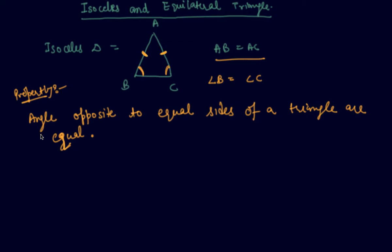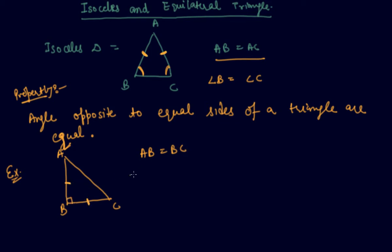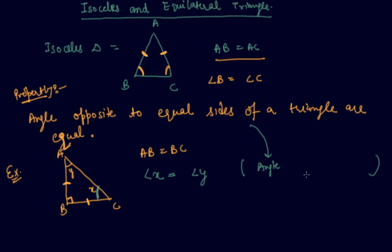There can be many exam questions based on this property. Let me give you one example. We are given triangle ABC where AB equals AC, angle B is 90°, and we have to find angle X and angle Y. Since AB equals AC, the angle opposite to AB will be X and the angle opposite to AC will be Y. By the property that angles opposite to equal sides of a triangle are equal, angle X equals angle Y.